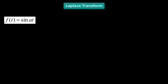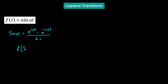Here we have the trigonometric function sine of at. Let's try to find the Laplace transform of this given function. Before that, we are going to convert sine of at to its Euler form, which is e raised to the power of i times at, minus e raised to the power of negative i times at, over 2i.